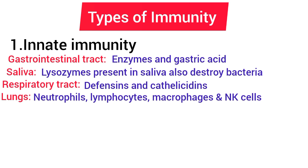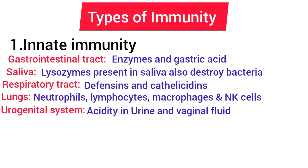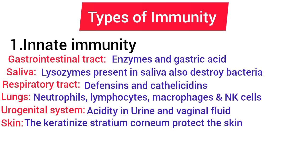Neutrophils, lymphocytes, macrophages, and natural killer cells present in the lungs act against bacteria and viruses. In the urogenital system, the acidity in urine and vaginal fluid destroys bacteria. In the skin, the keratinized stratum corneum of the epidermis protects against toxic chemicals, and beta-defensins in the skin are antimicrobial peptides.